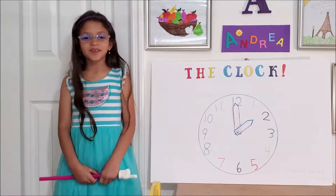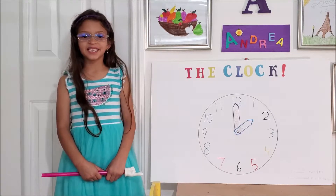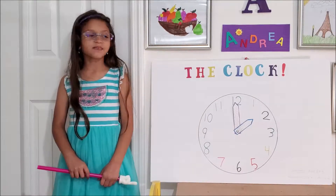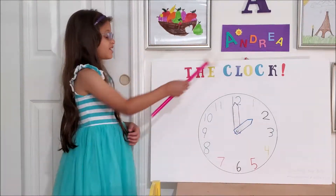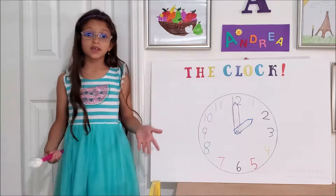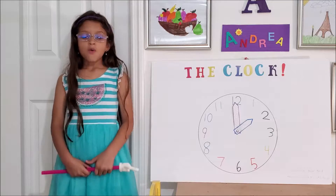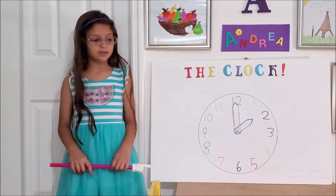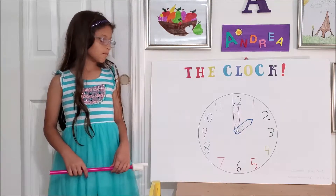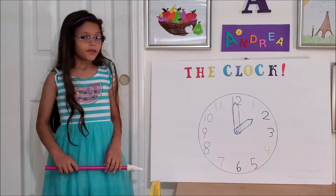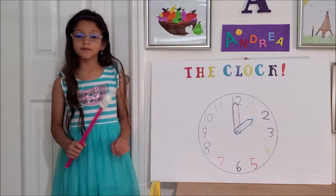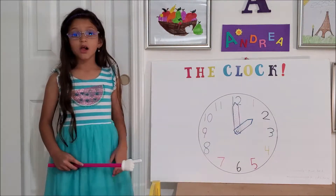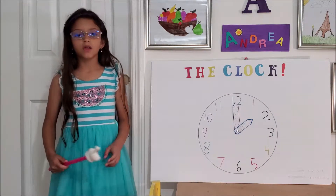Hi, my name is Andrea Martinez and today we're going to be learning about the clock. What is a clock? Well, a clock is something that tells us what time it is. There are two types of clocks: the analog clock and the digital clock.